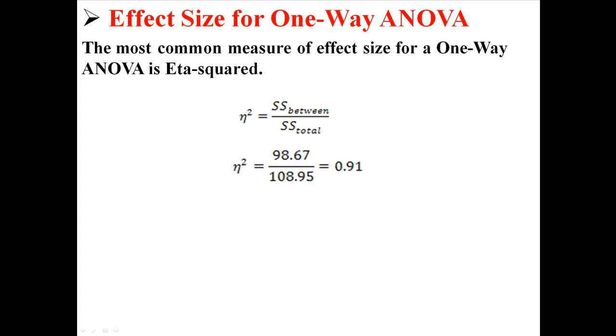For our example, taking the values from the table, we would take our sum of squares between, 98.67, and divide it by our sum of squares total, 108.95, and we find an eta squared of 0.91.